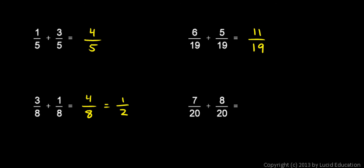7 20ths plus 8 20ths gives me 15 20ths, and 15 and 20 are both divisible by 5. When I divide 15 by 5 I get 3, and when I divide 20 by 5 I get 4. 15 20ths reduces to 3 4ths. So 7 20ths plus 8 20ths is 15 20ths, and that's equal to 3 4ths.